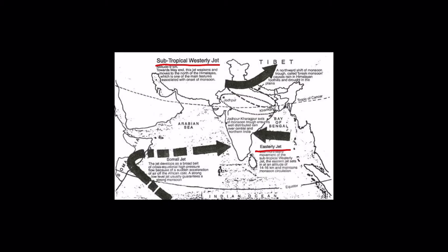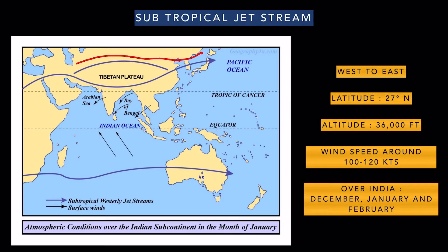Now let's talk about the two jet streams observed over our country: the subtropical jet stream and the tropical easterly jet stream. The subtropical jet stream blows from west to east and is located around 27 degrees north at 36,000 feet, which is around 12 kilometers. The wind speed here is around 100 to 120 knots. This jet stream exists throughout the year but moves with respect to the heat equator, and over India it is observed in the winter months of December, January, and February. The reason for this jet stream is the temperature difference between the Hadley and Ferrel cells.